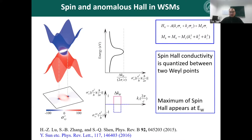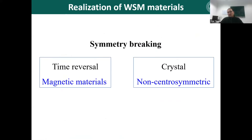So this is a very interesting result. How to realize it in real materials? According to the symmetries, the Weyl point is a doubly-degenerate point — we need to break the spin degeneracy. We need to break the time reversal symmetry. It means it can exist in magnetic materials or in materials without inversion symmetry.